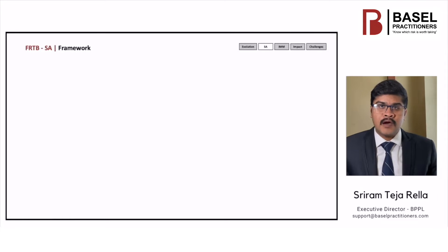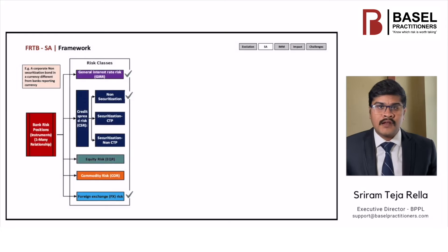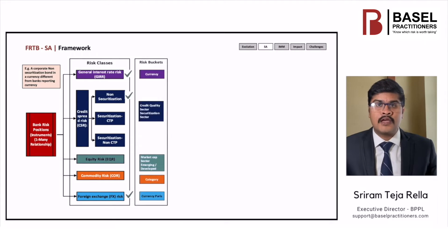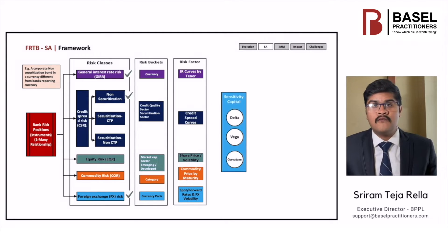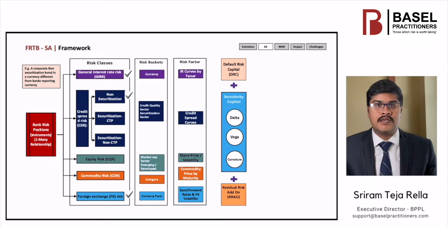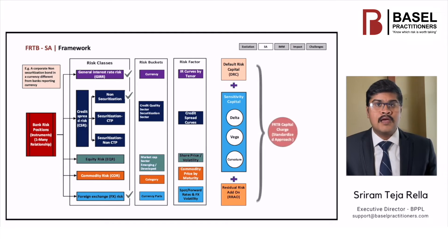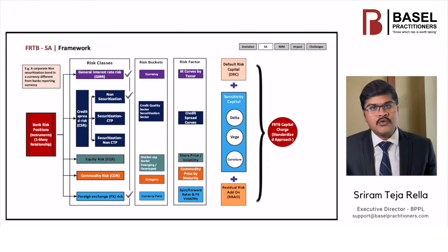Now, let us discuss the FRTB standardized approach. Instruments are first mapped to a set of regulatory prescribed risk classes and risk buckets based on the regulatory prescribed risk factors critical to each instrument. The bank uses sensitivities derived from its pricing models to determine the size of its risk positions with respect to each risk factor, and computes the delta, vega, and curvature risk charges. For instruments with credit risk, a separate default risk charge is computed. If the instrument belongs to an exotic category, an additional residual risk add-on is required. The sum of all three capital charges is the capital charge under the standardized approach.